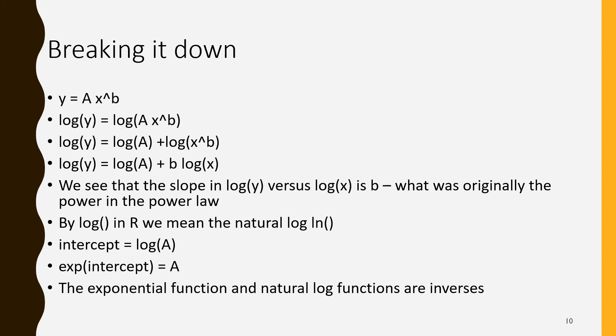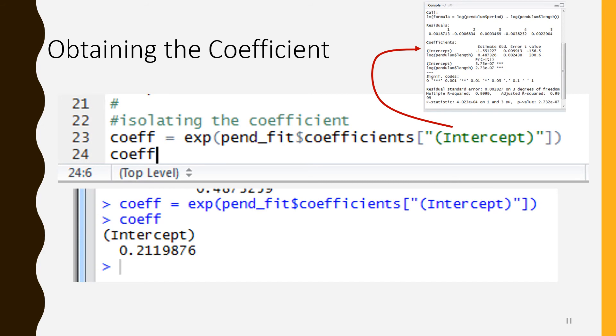If we want our original, the intercept now is log of a. If we want the original coefficient of the power law back, we're going to have to undo the log. The way you undo the log is an exponential.